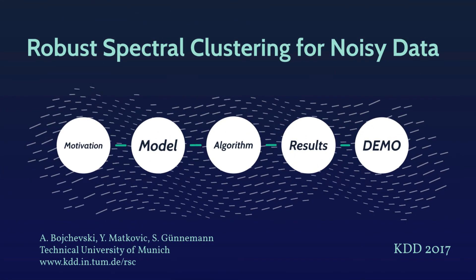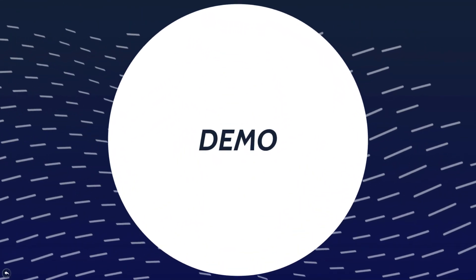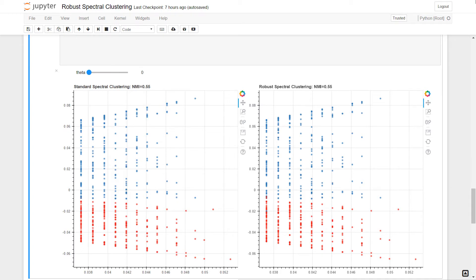Finally, we demonstrate our approach with a small experiment. On the left, we see the embedding obtained by standard spectral clustering. On the right, the embedding obtained by our approach. The data points are colored according to the two ground-truth clusters. We can see, when no corruptions are removed, the two clusters are not easily separable.